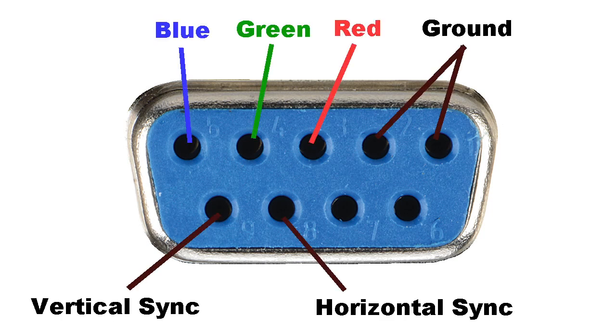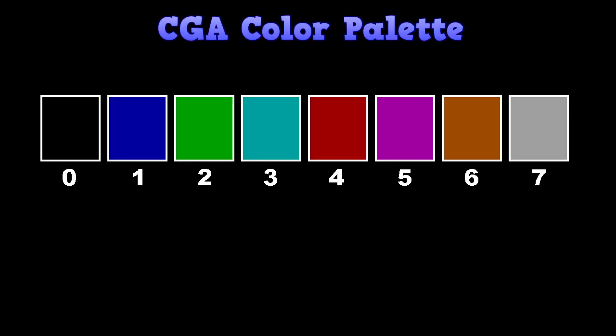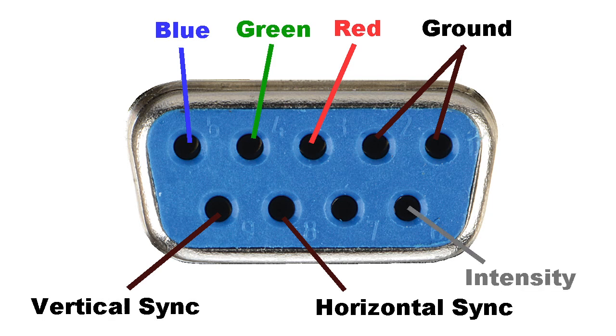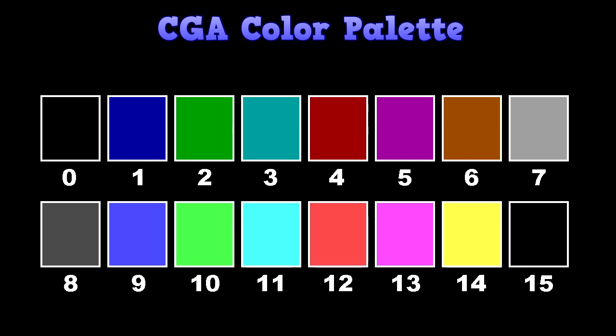Pins 3, 4, and 5 were for your red, green, and blue signals. These were digital signals that were either on or off with no in-between shades, so by using them in different combinations you could create 8 colors. Pin 6 was called intensity — this signal added one additional level of brightness, giving you 8 more possible colors, for a whole 16-color palette. The limitation of 16 colors comes directly from the monitor itself.